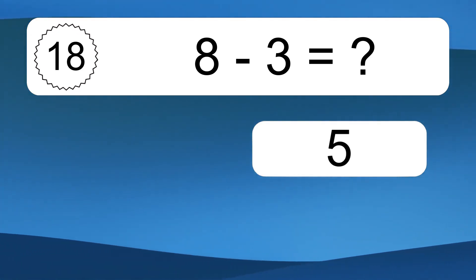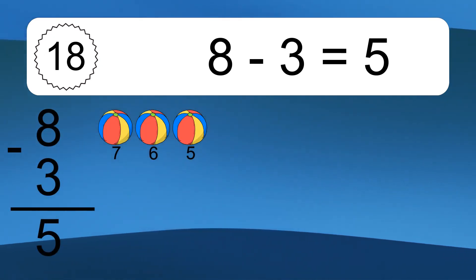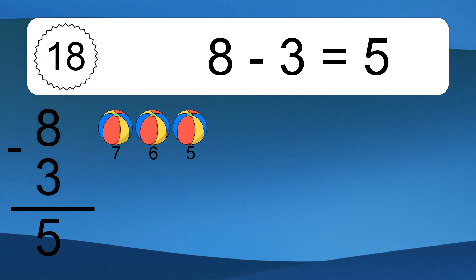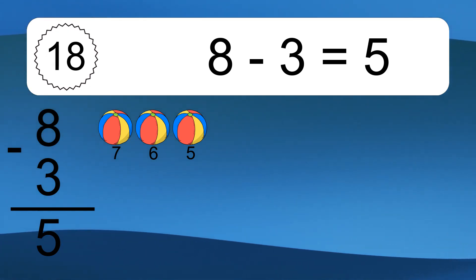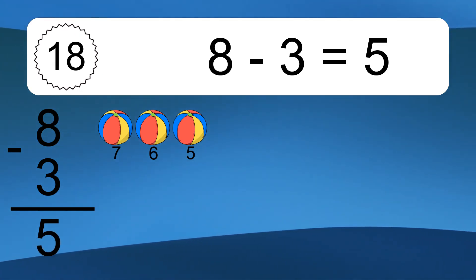8 minus 3 equals what? 8 minus 3 equals 5. Let's count it. 7, 6, 5.